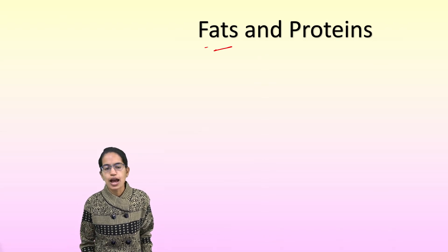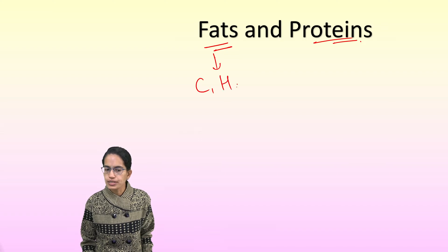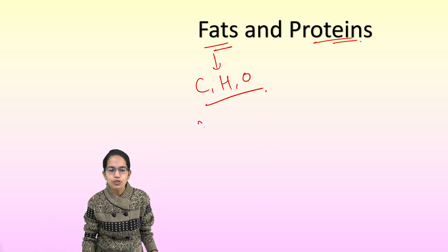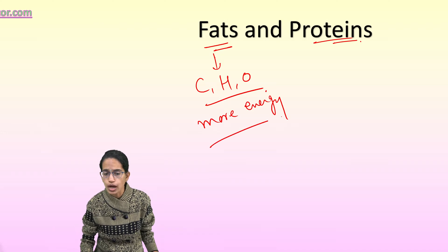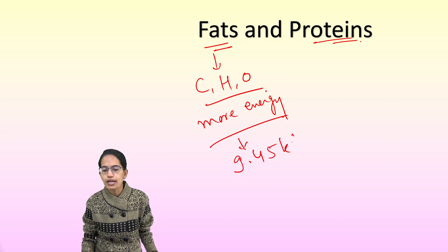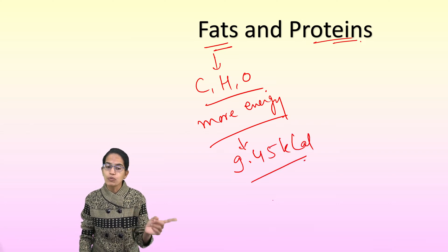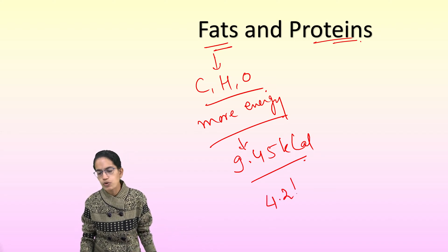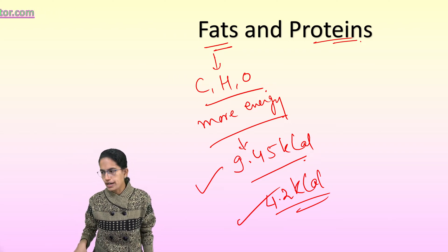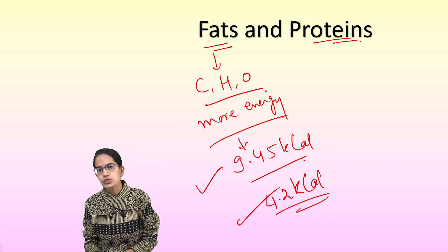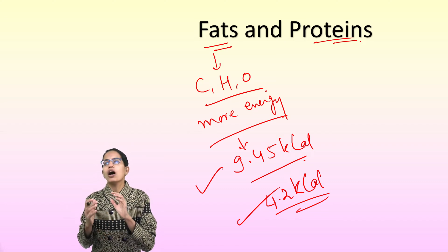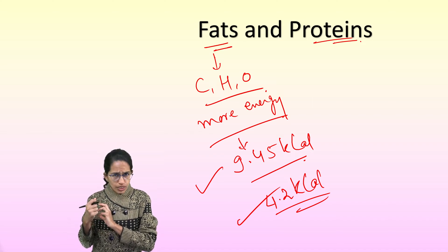Fats are made up of carbon, hydrogen, and oxygen, similar to carbohydrates, but they produce more energy. One molecule of fat can release 9.45 kilocalories, in contrast to one molecule of carbohydrate which releases only 4.2 kilocalories. Fat provides a fatty layer in the form of adipose tissue, which protects internal organs, acts as a cushioning agent, and prevents the body from extreme cold by preventing heat loss.